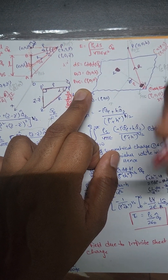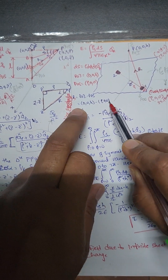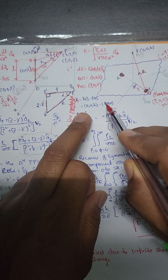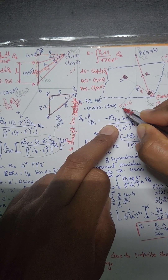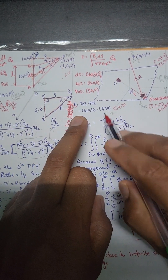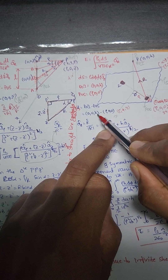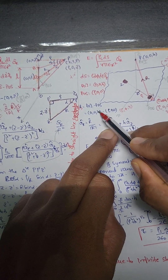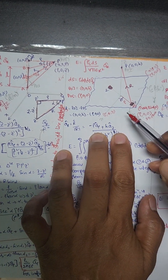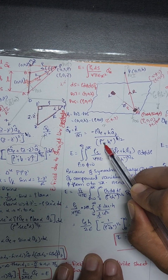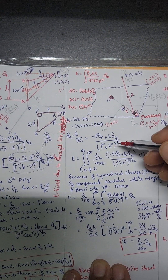What is r? It is point of interest minus point of source. You will be getting r in the rho, phi, z directions as: (0 minus rho) a_rho, (0 minus 0) — which is nothing, and (h minus 0) a_z, giving r = –rho a_rho + h a_z. What is the magnitude of r? It is nothing but (rho squared plus h squared) to the power 1/2.